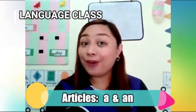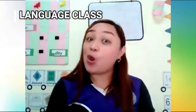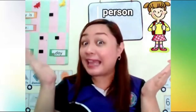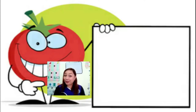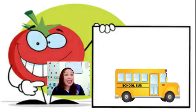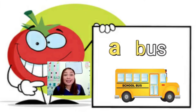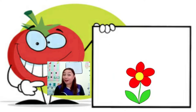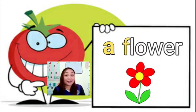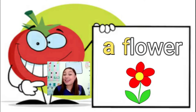Remember in your mind that we only use 'a' and 'an' when we're talking about only one name of a person, place, thing, or event. For example, look at the pictures. A bus — B is a consonant letter, so that's why we use 'a'. Another one: a flower. The first letter is F and it is a consonant, so that's why we use 'a'. A flower.